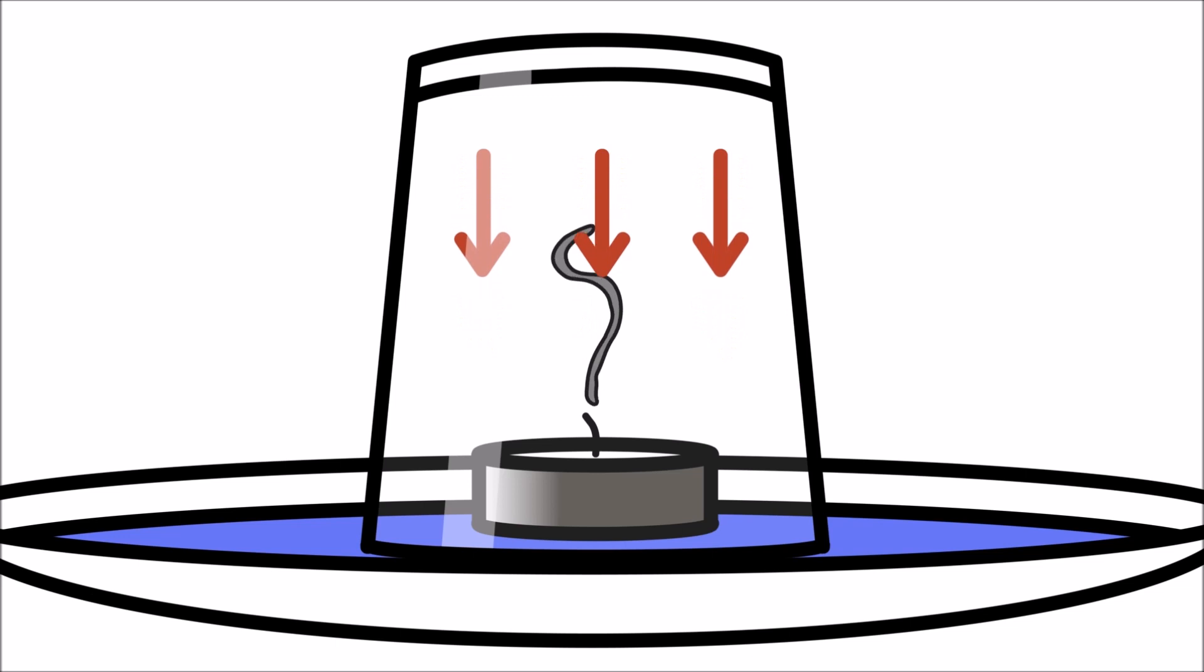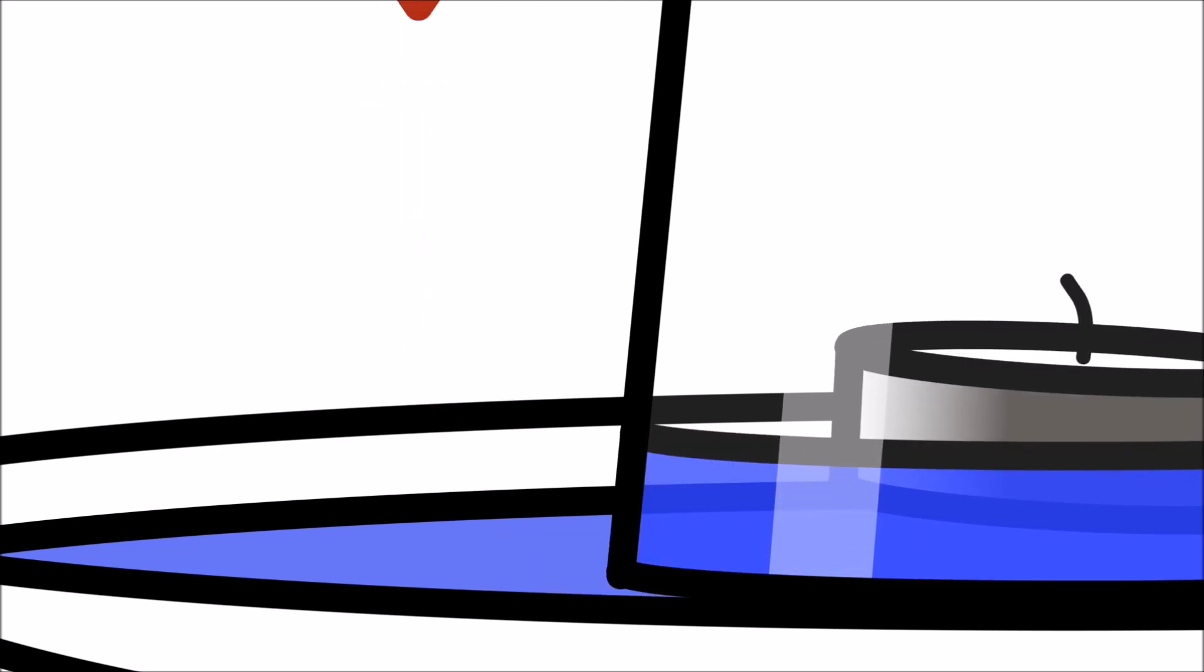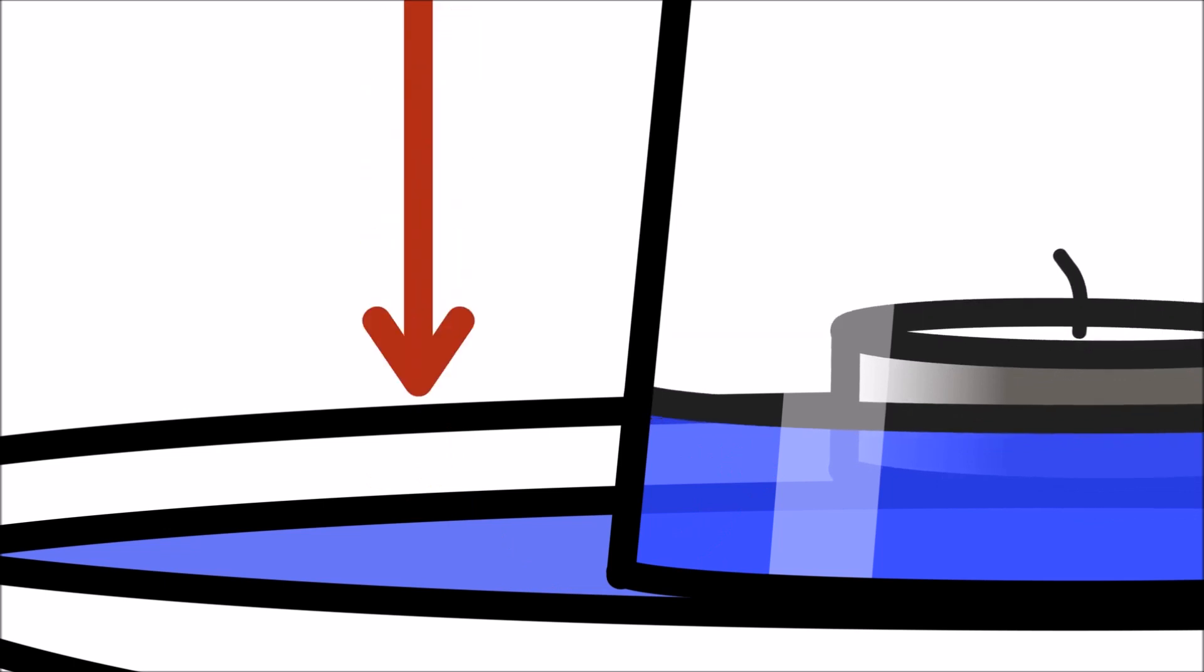The lack of oxygen lowers the pressure inside the glass. The higher pressure outside the glass pushes the water from the plate up and into the glass.